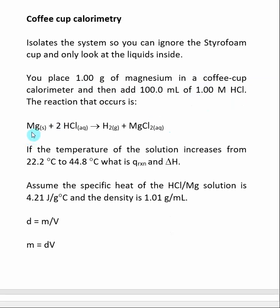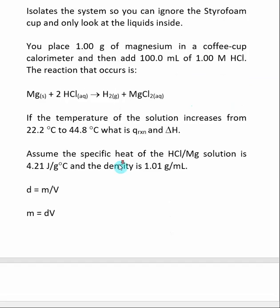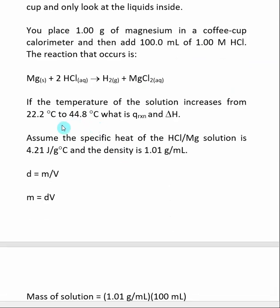A reaction occurs between the magnesium and the HCl, and the temperature of the calorimeter increases from 22.2 degrees C to 44.8 degrees C. Typically you have the cup, you add the reactants, and then you have a thermometer that you stir and monitor the temperature.